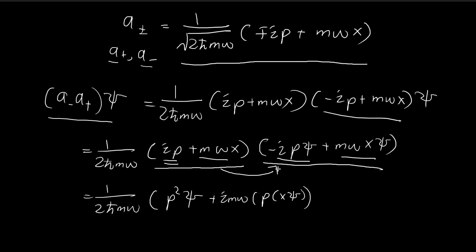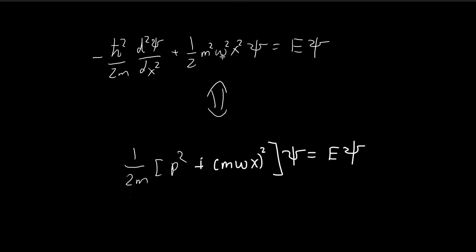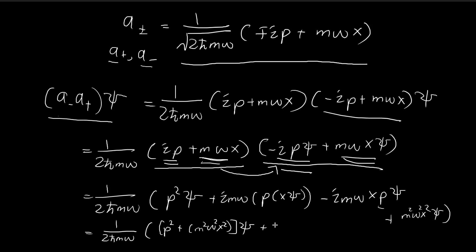Moving on with our proof, we apply this part to that part and once again pull out the constants. This time we have x p ξ, so x is on the outside and is not affected by the derivative. Then we have the m omega x squared term applied to ξ. I'm going to rewrite this in a slightly different form, grouping up the p squared and the m squared omega squared x squared terms, because this looks suspiciously like what we derived earlier. The remaining terms are what we need to simplify next.